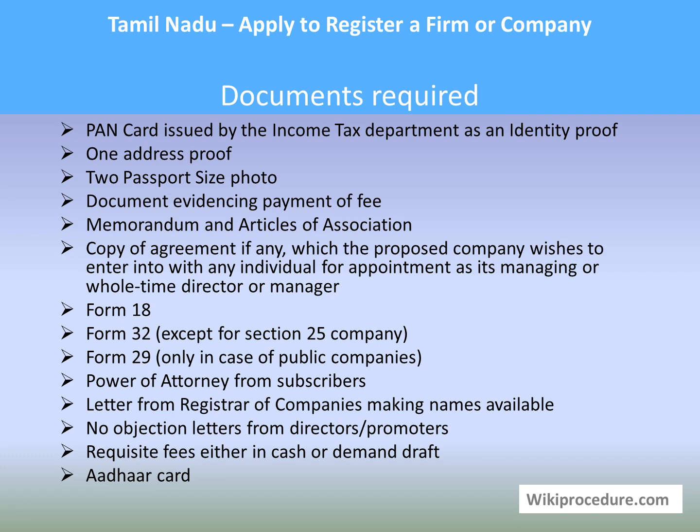Additional documents include: appointment of assets managing or whole-time director or manager; Form 18; Form 32 (except for Section 25 company); Form 29 in the case of public companies; power of attorney from subscribers; letter from the Registrar of Companies making the name available — the selected name should not already be registered; no objection letter from the directors or promoters; and requisite fees either in cash or demand draft.